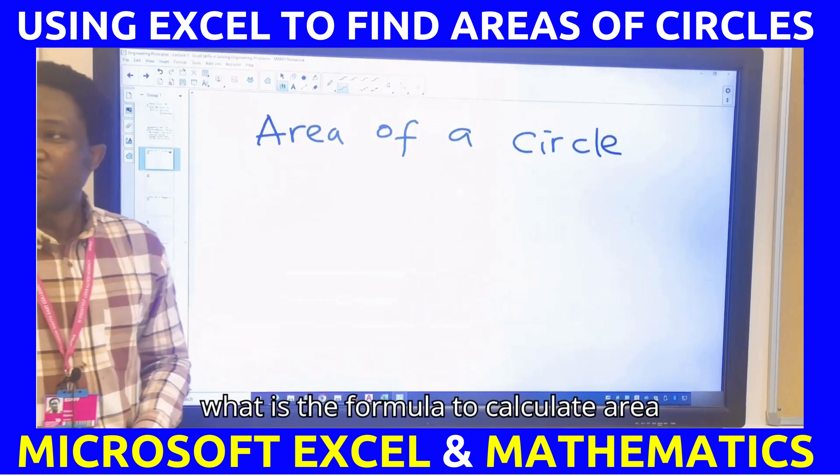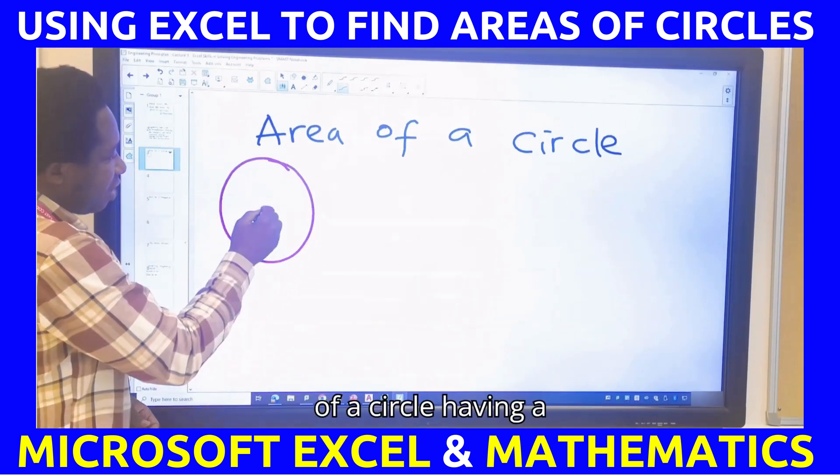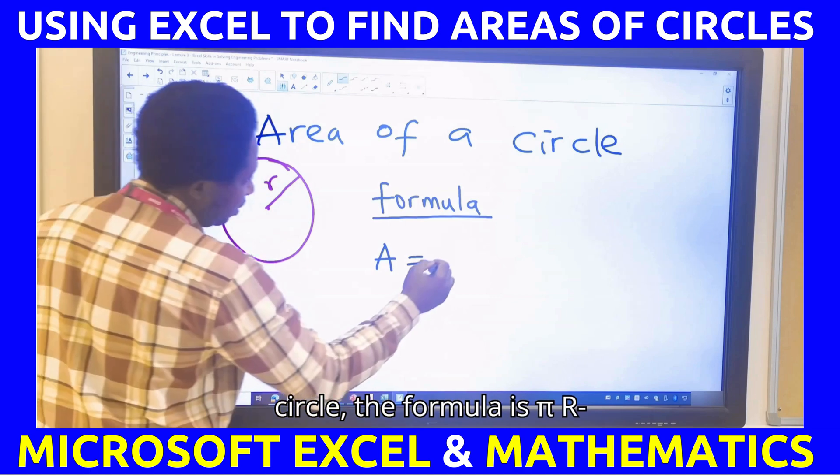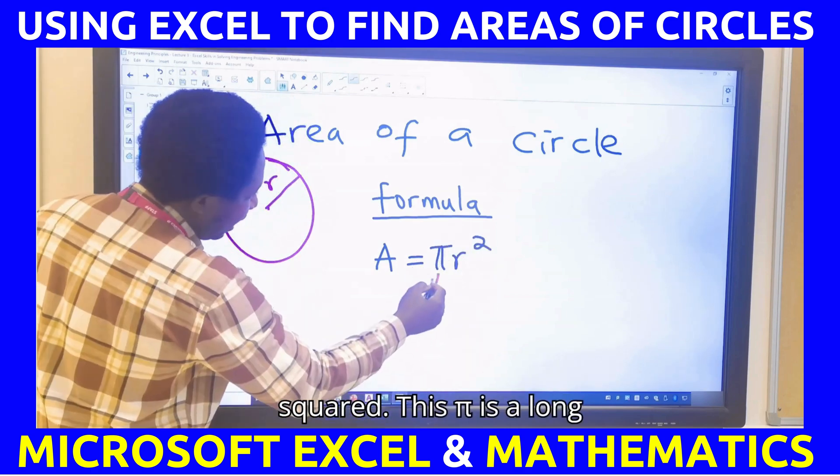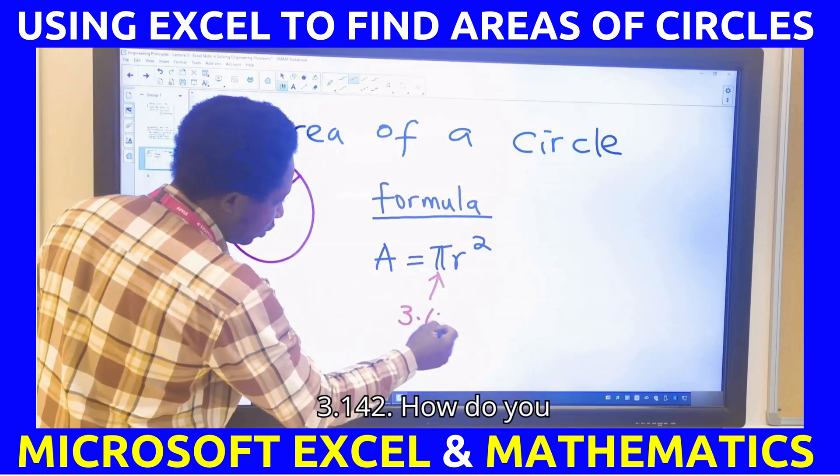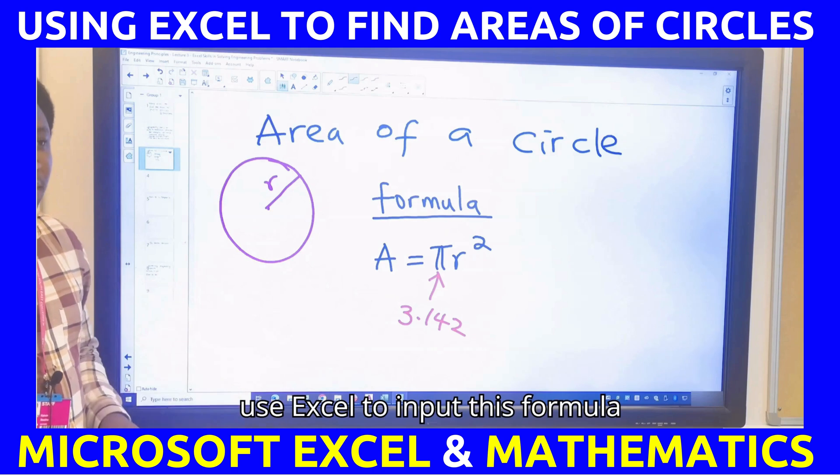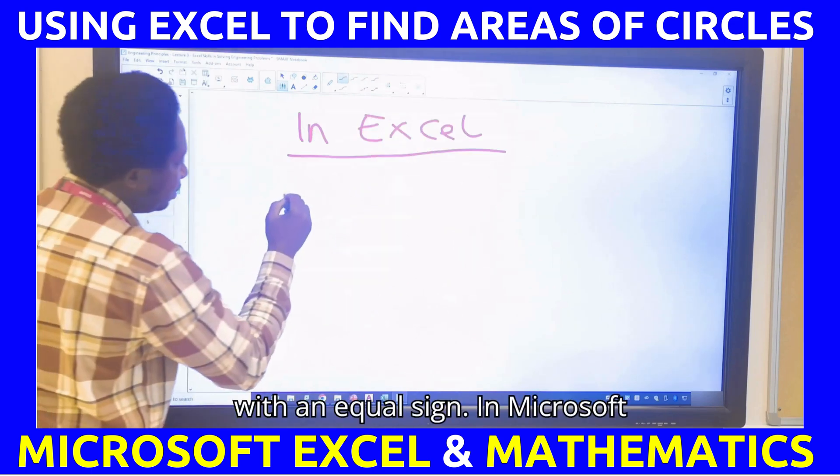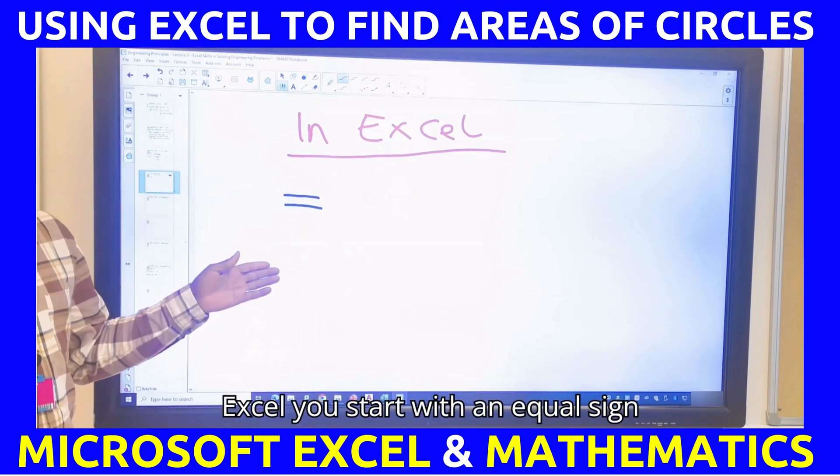Area of a circle. What is the formula to calculate area of a circle? Having a radius, to calculate the area of this circle, the formula is pi r squared. This pi is a long value, though we can have 3.142. How do you use Excel to input this formula? In Excel, I will start with an equal sign. In Microsoft Excel, you start with an equal sign.